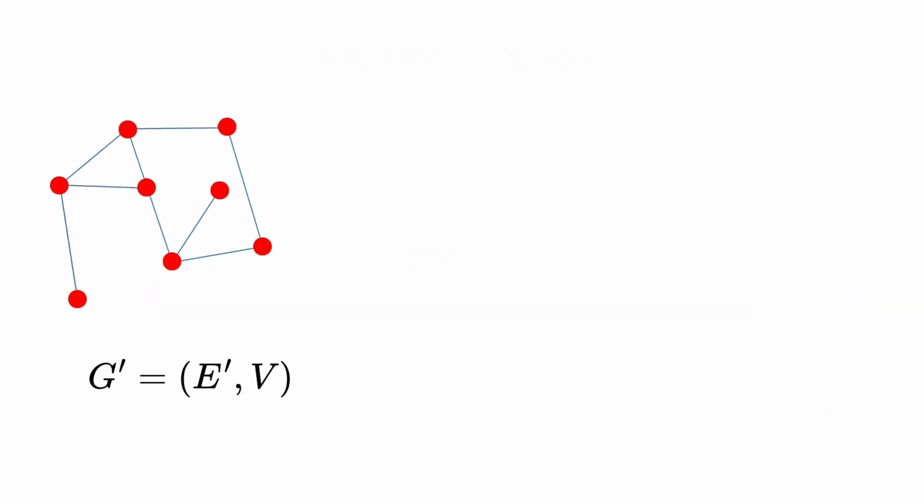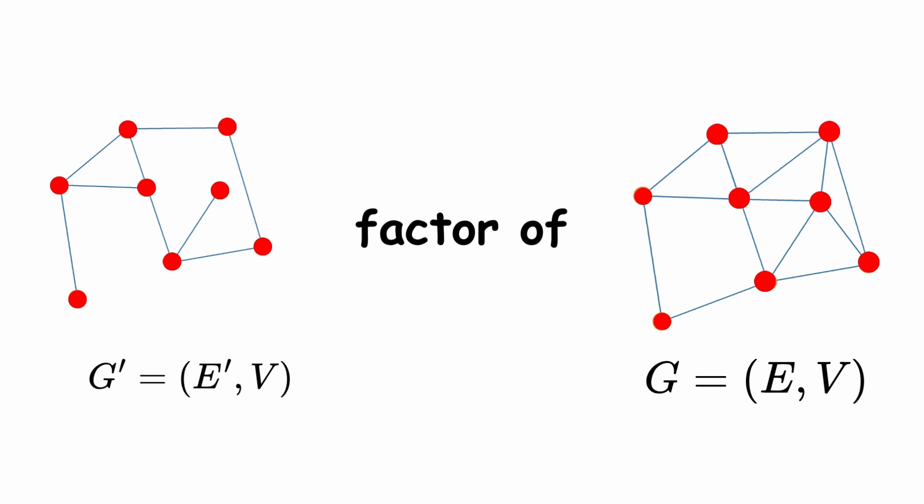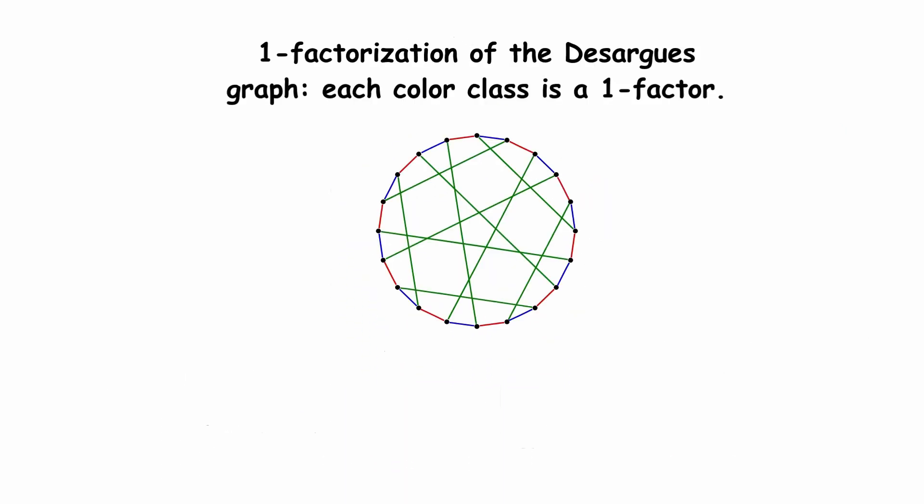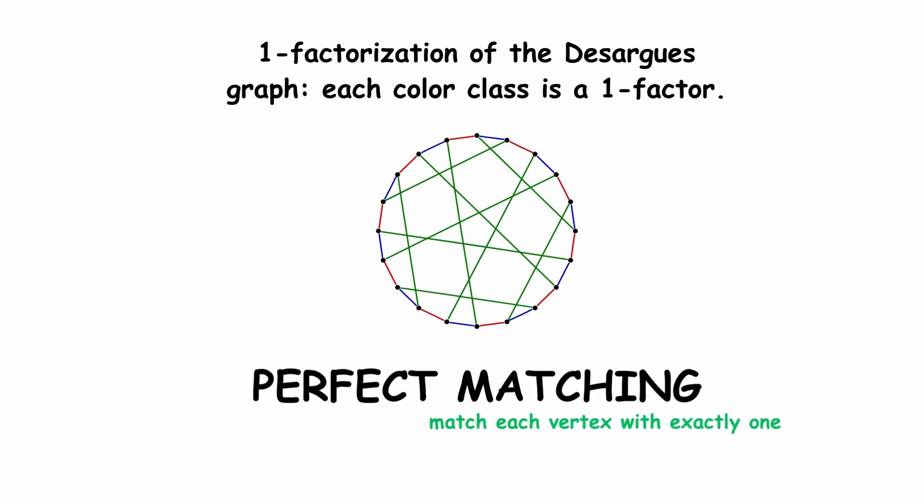A spanning subgraph is also called a factor of the original graph, and if it is k-regular, then it is called a k-factor. In particular, a one-factor is also called a perfect matching, where you can match each vertex with exactly one neighbor.